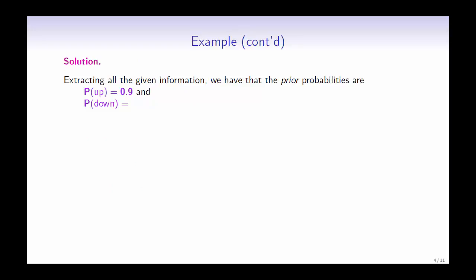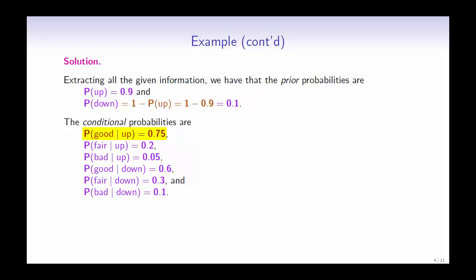Extracting all the given information, the prior probabilities are: the probability of the stock price going up is 0.9, and the probability of it going down is 1 minus 0.9, which equals 0.1. The conditional probabilities are: P(good market | up) = 0.75, P(fair market | up) = 0.2, P(bad market | up) = 0.05, P(good market | down) = 0.6, P(fair market | down) = 0.3, and P(bad market | down) = 0.1.